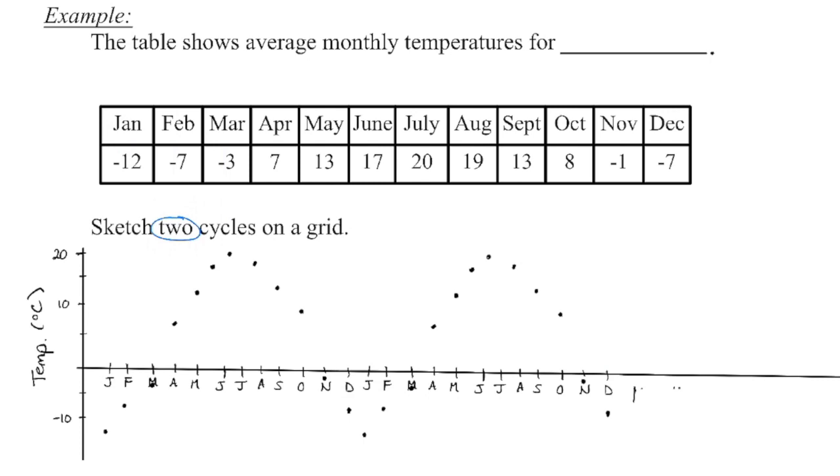When we plot those data points, we can see that it forms a sinusoidal curve. So that indicates we're going to do sinusoidal regression, entering month into list one, entering temperature into list two. Now, because we can't type in January, February, March, etc., we're going to put in the numerical values. First month, second month, third month, and so on.